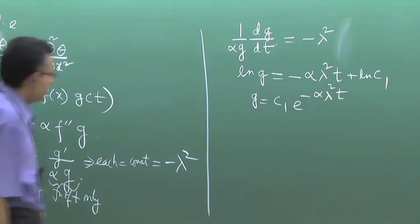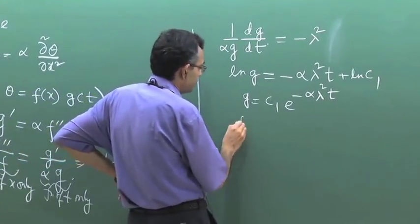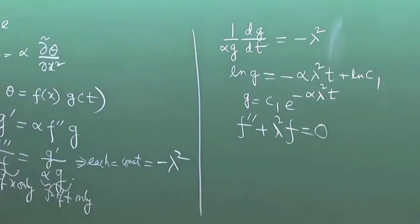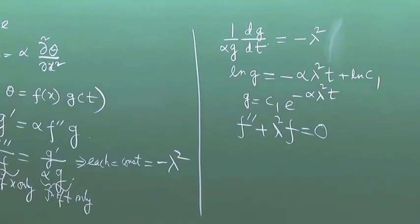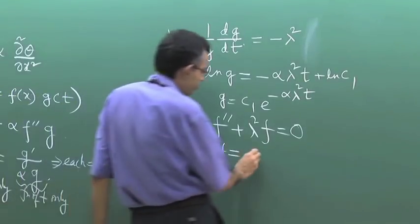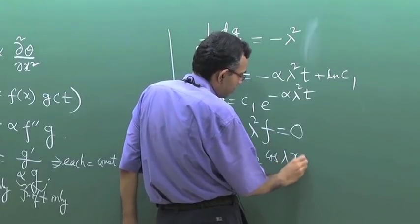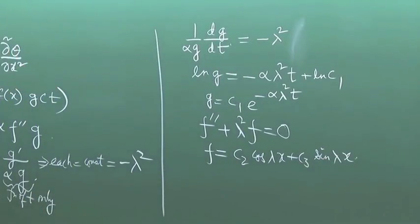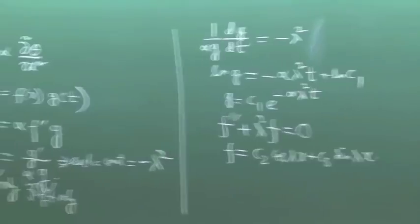Now, what is the solution for F? The solution involves cosine and sine: F = C2 cos(lambda x) + C3 sin(lambda x). The full solution theta is the product of F and G.